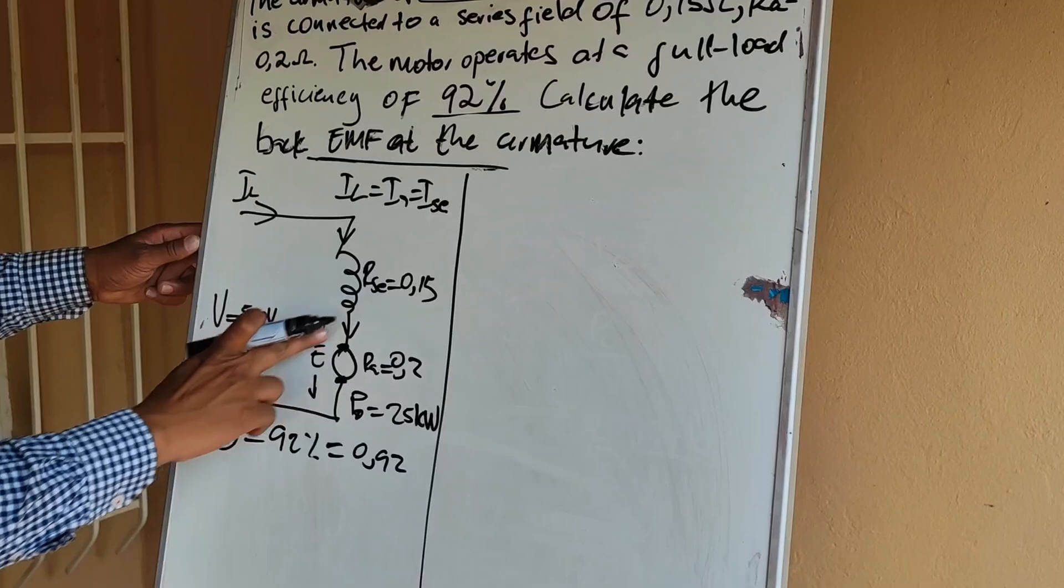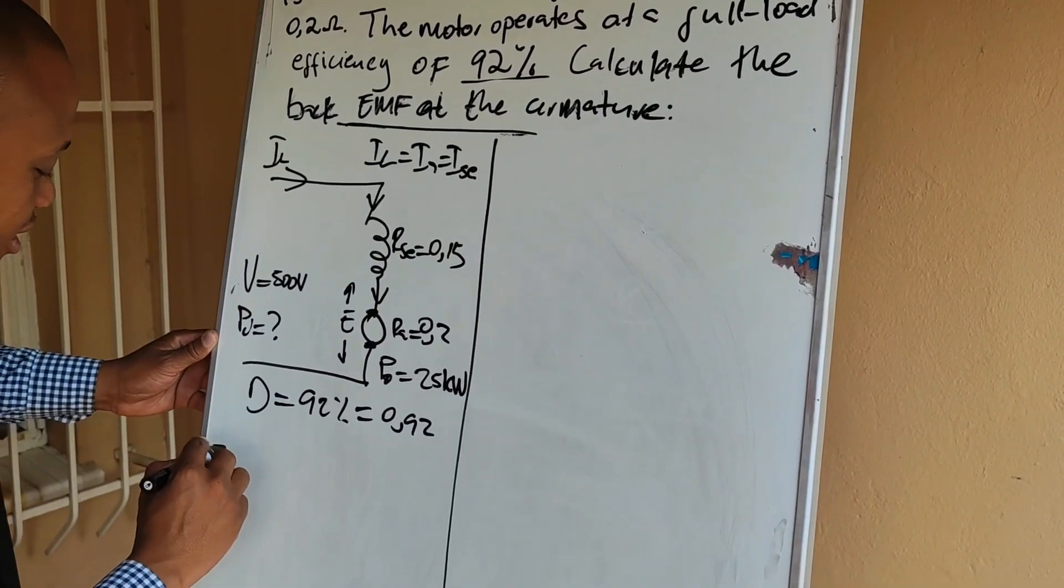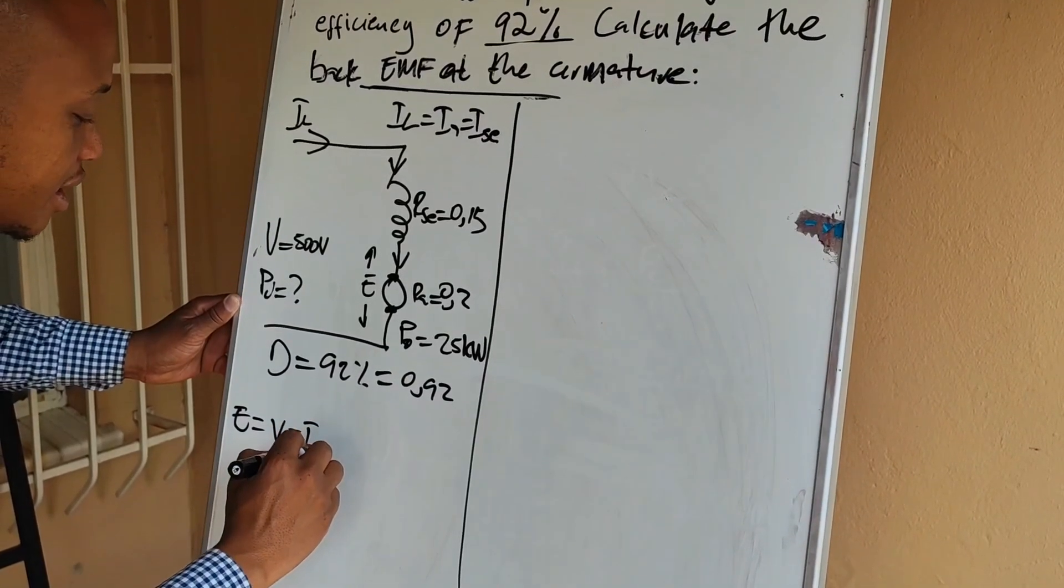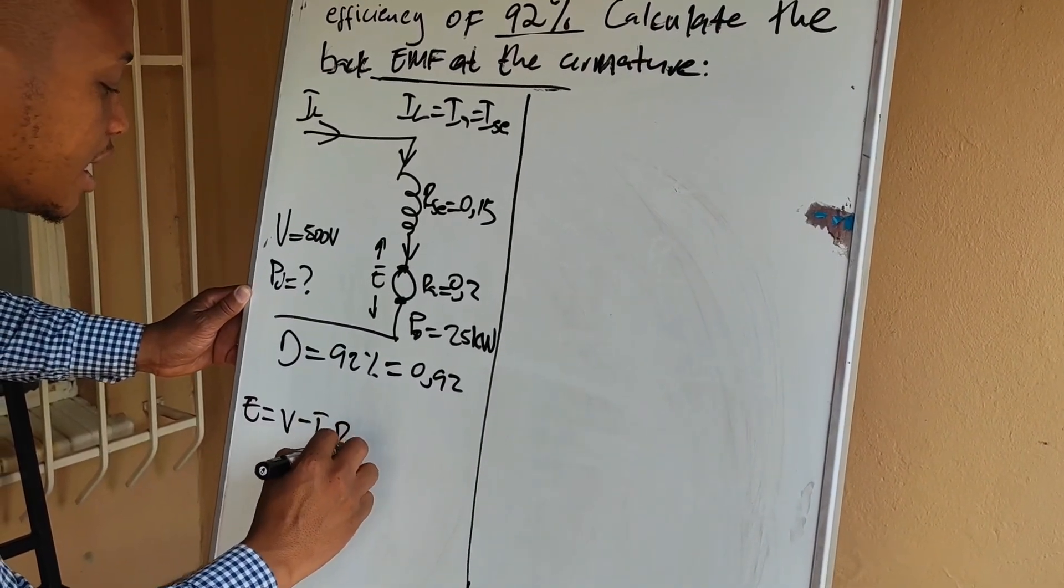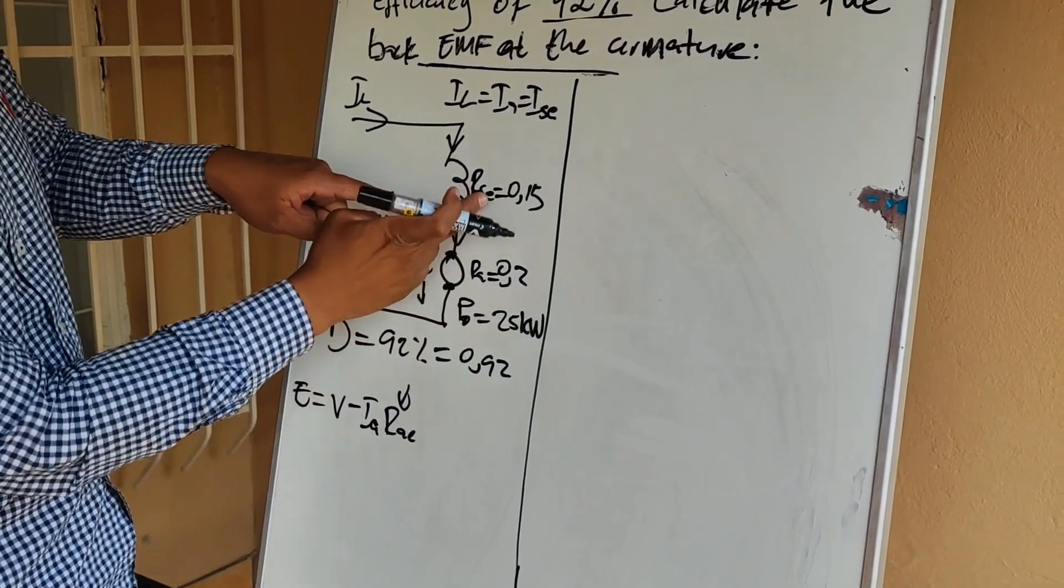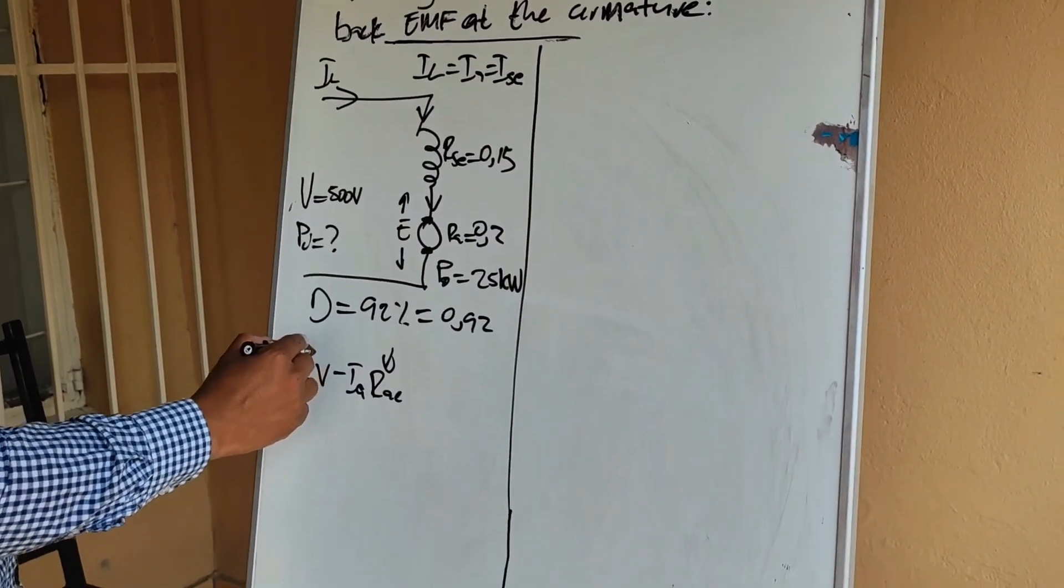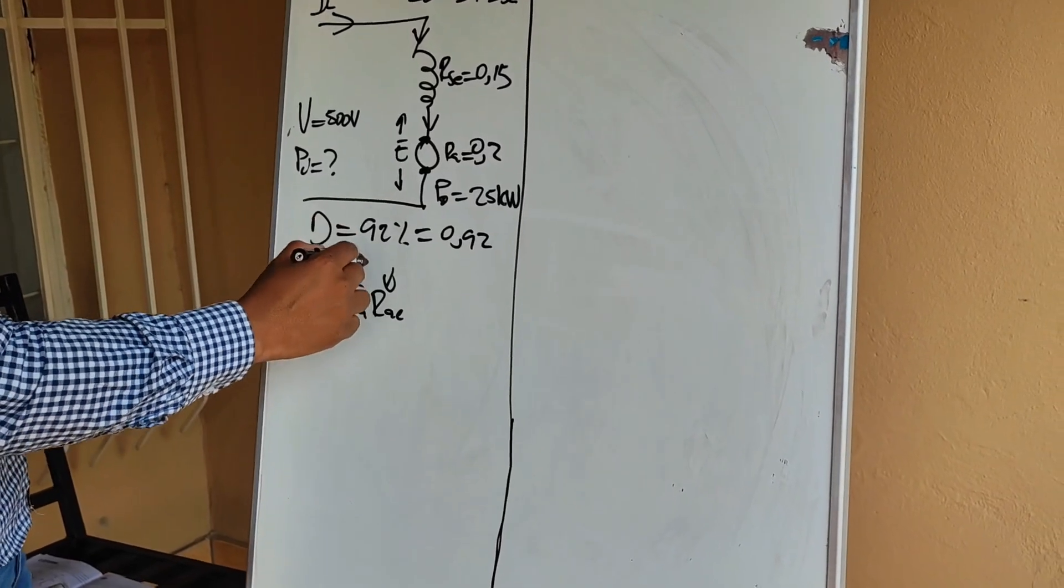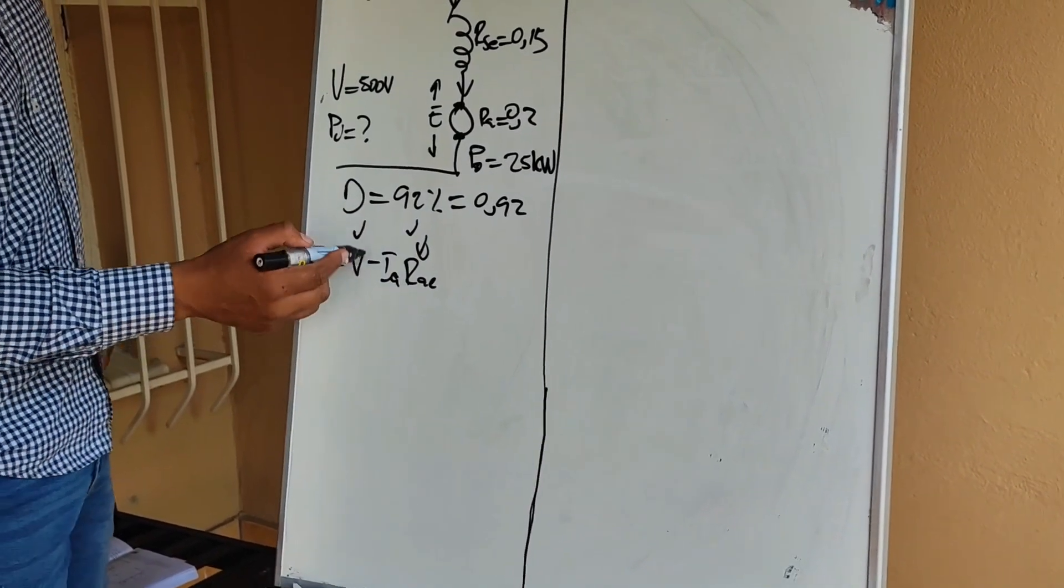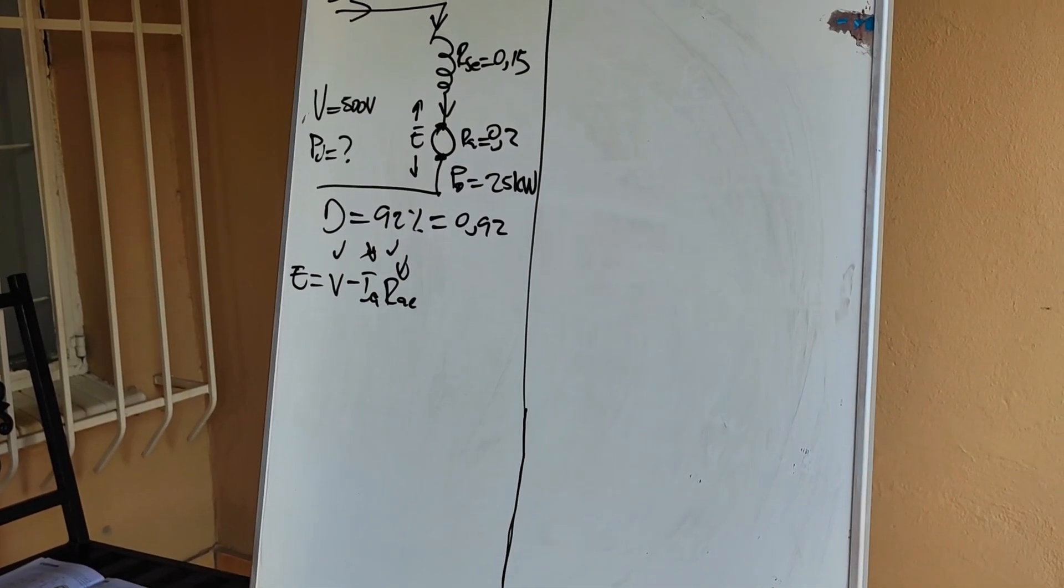And we do know that if you apply Kirchhoff's voltage law, you can find that E is equal to V minus IA multiplied by RAC, where RAC is the combination of RA plus RSE. So in this equation, I do have the value of V and the value of RAC. I just do not have this value of the armature current. So that is where I need to start.